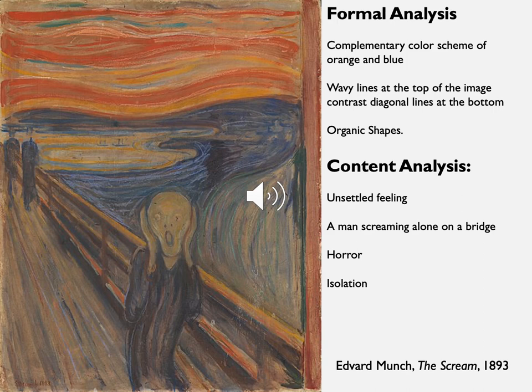Let's practice our analysis skills using formal analysis and content analysis by evaluating Edvard Munch's The Scream, created in 1893. When looking at this piece formally, we can see the artist used complementary colors of orange and blue in the sky and more neutralized colors in the bridge going across the bottom of the image. Wavy lines at the top of the image contrast diagonal lines at the bottom, and the artist used organic shapes in the figures and in the sea.